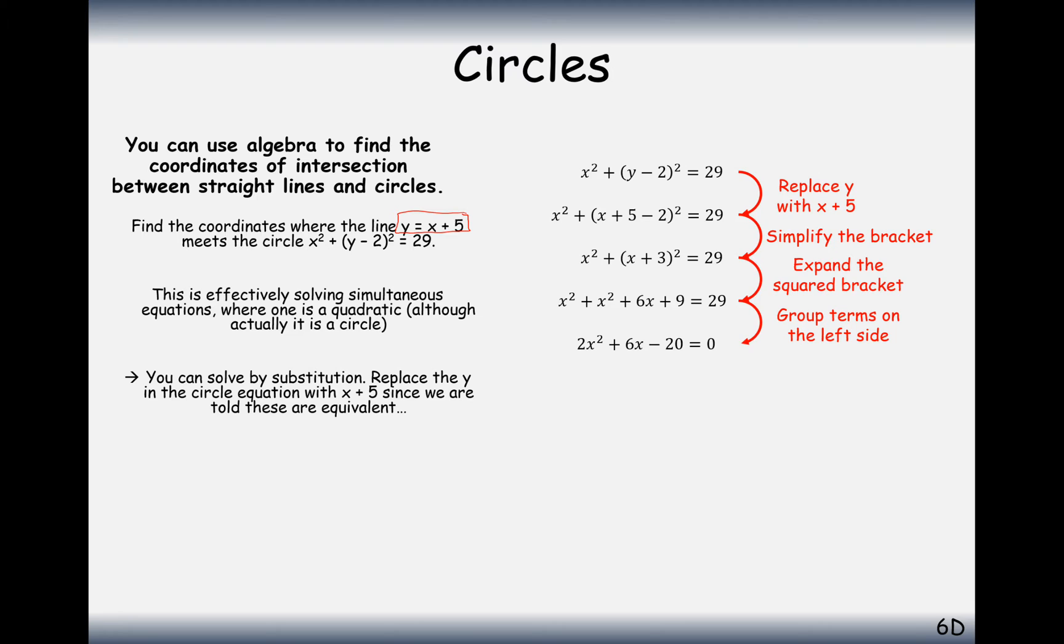Collect like terms and group on the left, so we can start to factorise. Because everything is an even number, I'd certainly divide through by 2 to make life easier for myself, and then we've got three terms here, so we're going to factorise and solve the equation. We get x is minus 5 and x is 2.